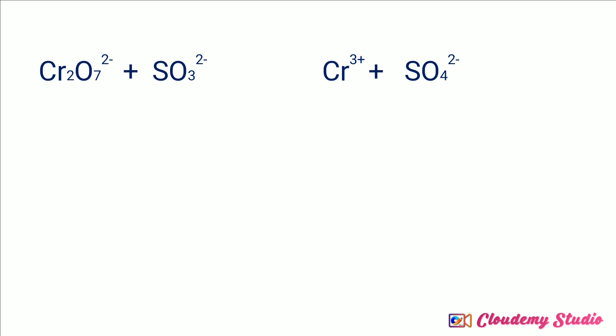The given equation is written once again with the arrow mark. The first step is to assign the oxidation number of all the atoms present in the ionic equation, so let's assign the oxidation numbers first.